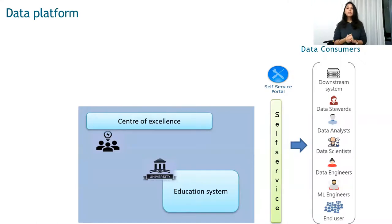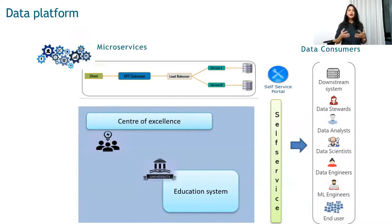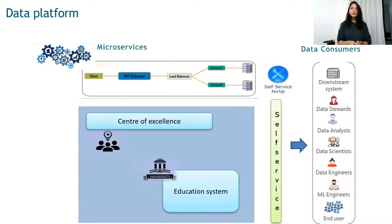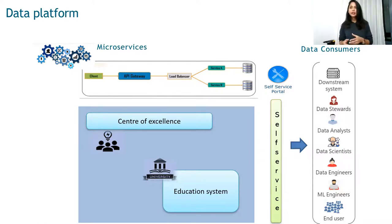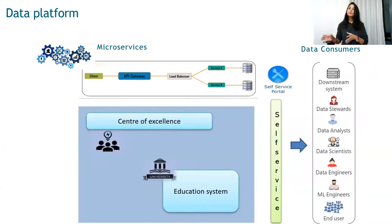The self-service portal enables you to connect with data and fetch it according to your needs. This is implemented with the help of a center of excellence — our chefs and platform teams — plus an education system that trains you on how to use these platforms, knowing what ingredients you can combine and how to get your output. With the help of microservices and API gateways, it's easy to connect different large datasets, and you get your data much faster. Tasks that used to take a week or two have been reduced to a day or two.